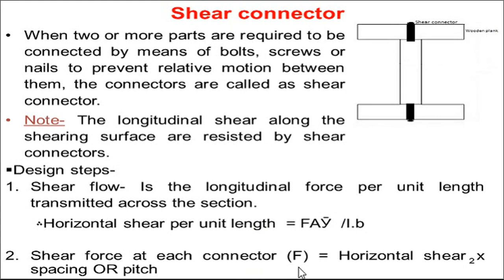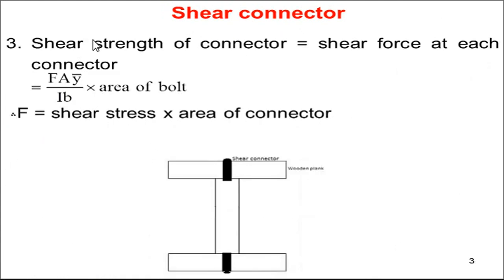The shear force at each connector: F = horizontal shear × spacing (or pitch). Spacing or pitch means the center-to-center distance between two bolts. That distance multiplied by the shear flow gives the total shear transmitted by the connector. The shear strength of the connector is calculated using shear force at each connector multiplied by the area — that is, if you know the shear stress transmitted and the area of the bolt, you can find the capacity of that bolt to transmit force.